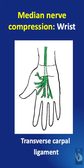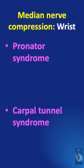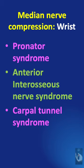The median nerve can also be compressed at the level of the carpal tunnel, known as the carpal tunnel syndrome. Pronator syndrome and carpal tunnel syndrome mainly present with pain and paresthesias, whereas anterior interosseous nerve syndrome presents mainly with muscle weakness.